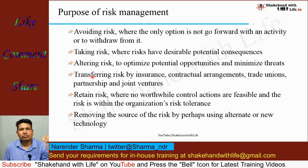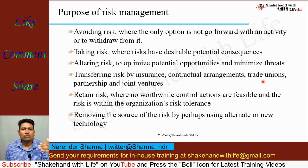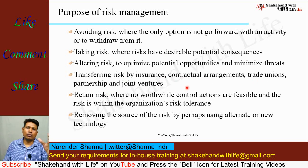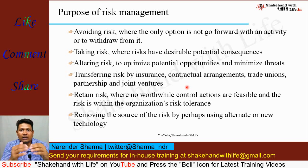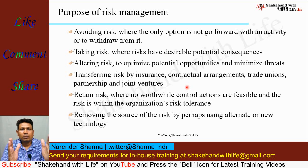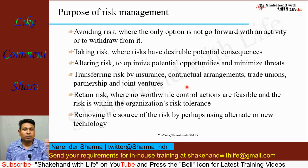Transferring risk can be done by taking insurance, contractual arrangements, trade unions, or partnerships and joint ventures. For example, if a person is doing a business alone, they bear 100% risk of failure. But if it is a partnership, the failure risk can be shared between two persons, 50% each.